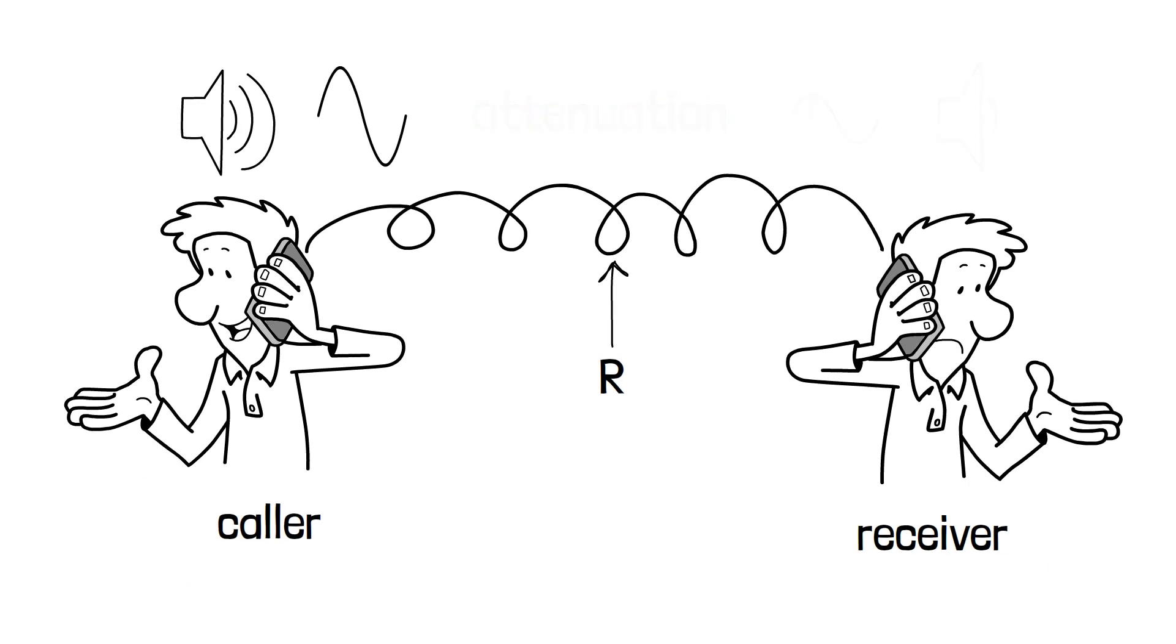The signal's amplitude is increased with devices called amplifiers to compensate for the losses due to attenuation. It makes the sound at the receiver loud enough.